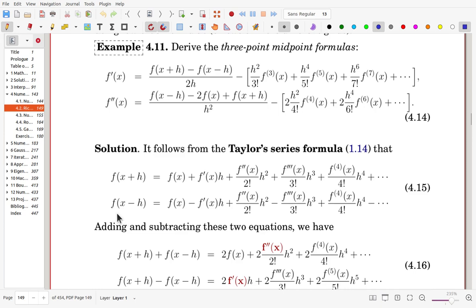Now for f at x minus h, you can get the formula easily by replacing h with minus h, so that for odd-order terms, we will change the sign here for h and h cubed, that is minus. For even-order terms, the sign will remain the same.